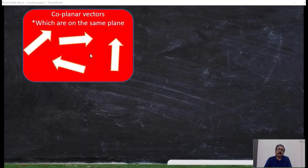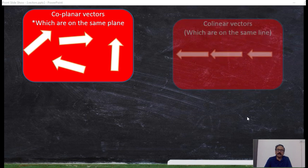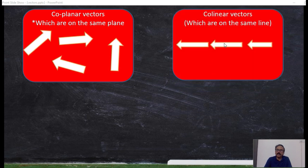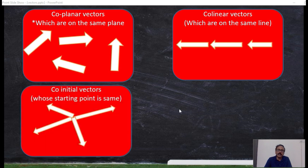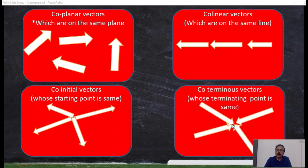If many vectors lie on the same plane, they are called co-planar vectors. If the vectors lie on a straight line, they are called co-linear vectors. If the vectors are initiated from the same point and move away from it, they are called co-initial vectors, because the initial point is the same for all. If all vectors terminate at one particular point, they are called co-terminus vectors.